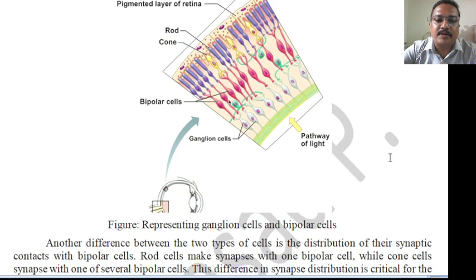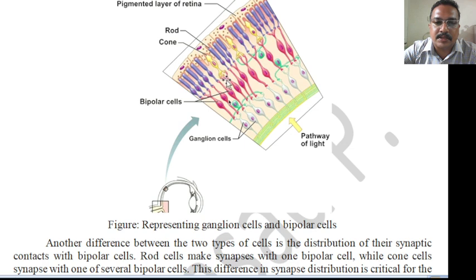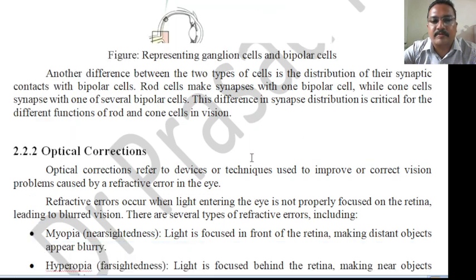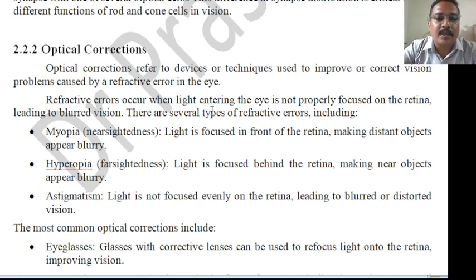Another difference between the two cell types is the distribution of their synaptic contacts with bipolar cells. Rod cells make synapses with one bipolar cell, while cone cells synapse with one of several bipolar cells. So cone cells are connected to many bipolar cells, but rod cells are connected individually. Rod cells and cone cells are important because they identify light intensity as well as color differences.